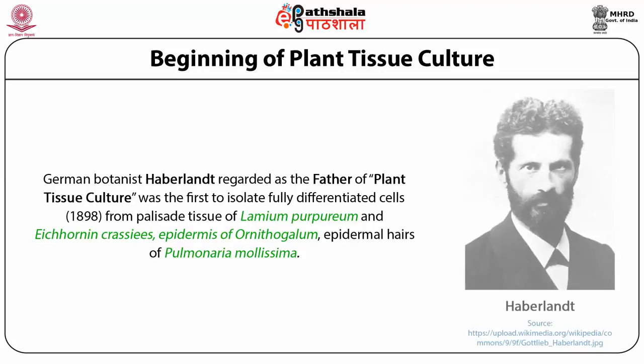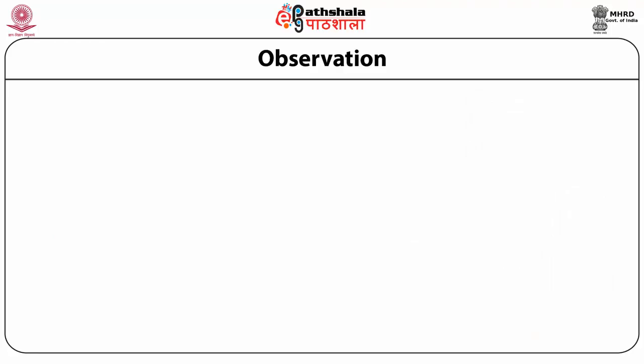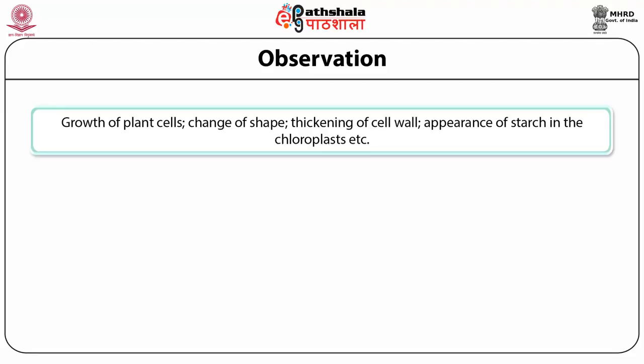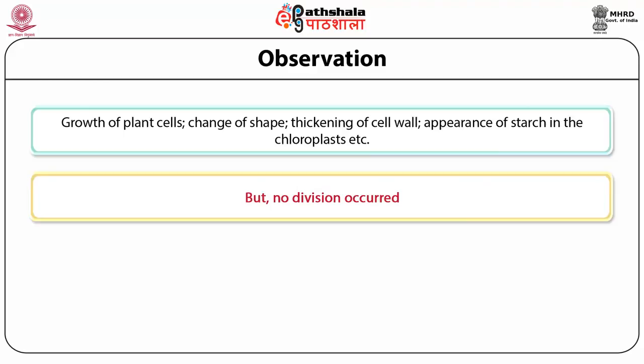There was a German botanist by the name Haberlandt whom today we call the father of plant tissue culture because of the large number of discoveries he made. He started with fully differentiated cells from palisade tissue as well as epidermis tissue and epidermal hair, and tried to grow them in isolation. He observed that these cells grew further, they changed their shape, thickening of the cell wall occurred, but unfortunately he did not discover any further division of those cells. He tried his level best — he was able to isolate the tissue, put them onto a culture media, sterilize them and put them in aseptic media — but why did he fail to get any growth?